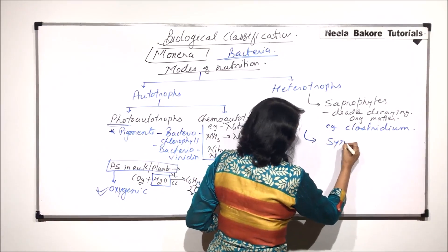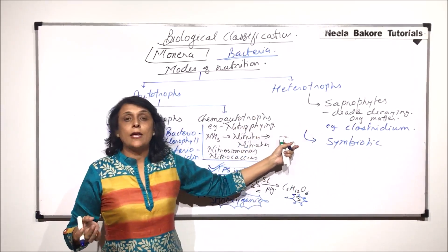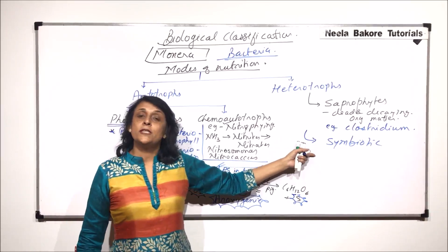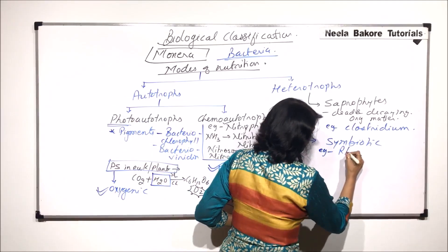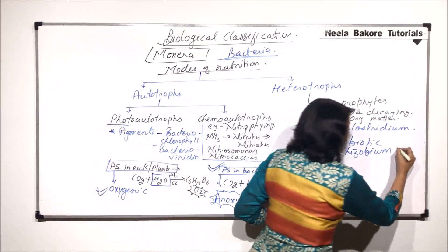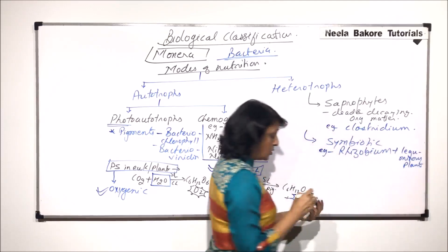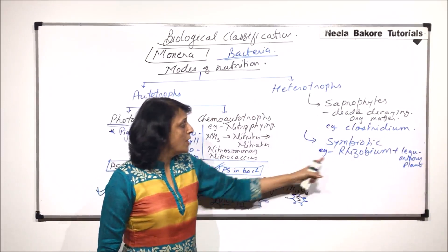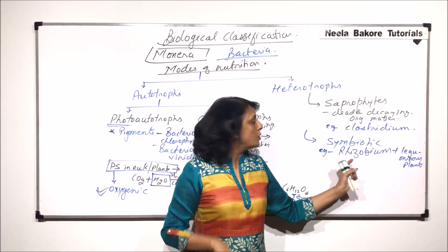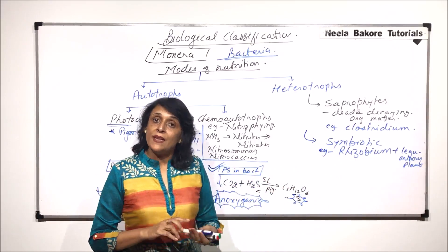Next is the symbiotic mode. In symbiotic mode, both the bacterium and the other organism with which the bacterium is associated have a mutual benefit. For example, Rhizobium is found in symbiotic association with leguminous plants. The association is mutually beneficial: Rhizobium fixes nitrogen for the plant, and the plant provides nourishment, water, and shelter to the bacterium. So the bacterium is not making its own nourishment — it is getting it from the other organism.